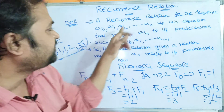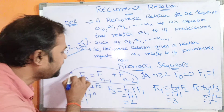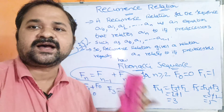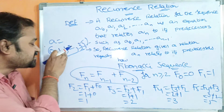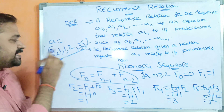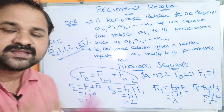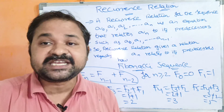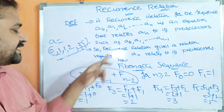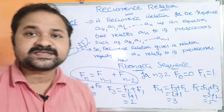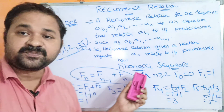A recurrence relation for this sequence is an equation. The equation here is Fn = Fn-1 + Fn-2. This is the recurrence relation equation that relates an to its predecessors. How to get one item using its two previous items — that is nothing but the recurrence relation. How to get 2 from 1 and 1, or 3 from 2 and 1 — that is what the recurrence relation describes.